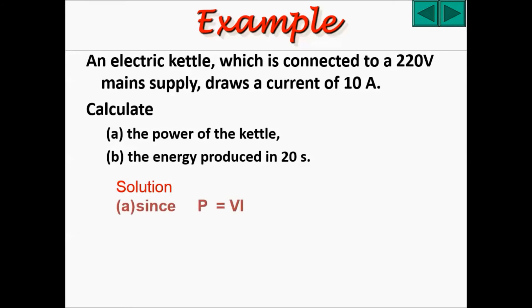The solution for this question is, since P equals to VI, you should use the V equals to 220, and I is the current of 10 amperes, which gets you 2,200 watts. The energy produced in 20 seconds would just be E equals to VIT, which is 220 times 10 times 20, and gets you 44,000 joules.